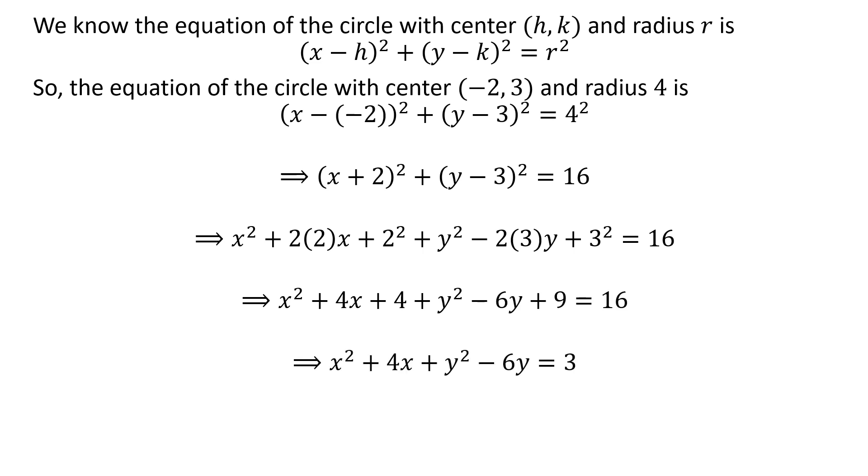Further simplification gives us x² + 4x + 4 + y² - 6y + 9 = 16, which simplifies to x² + 4x + y² - 6y = 3.